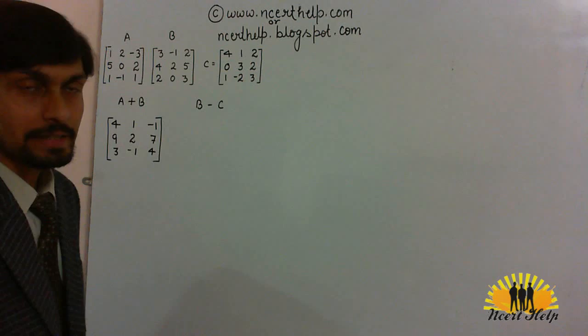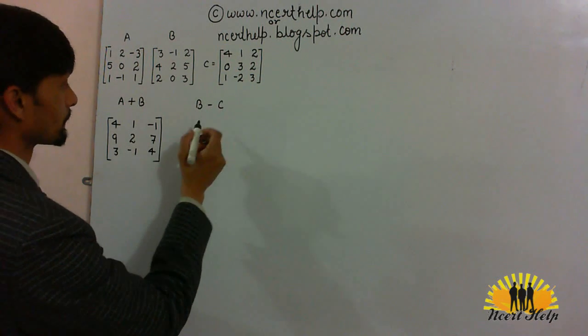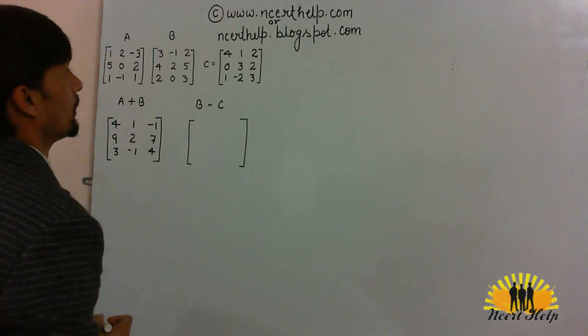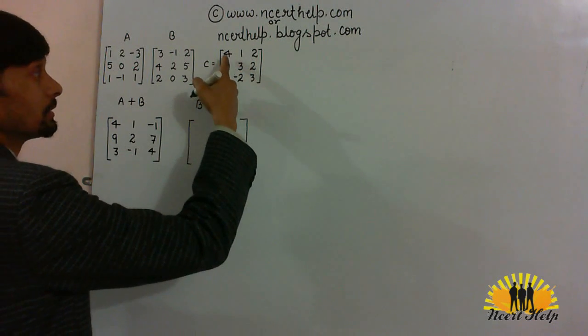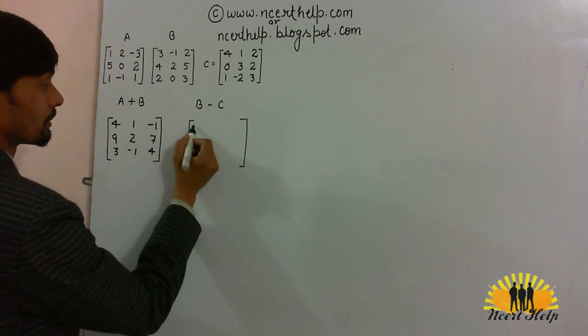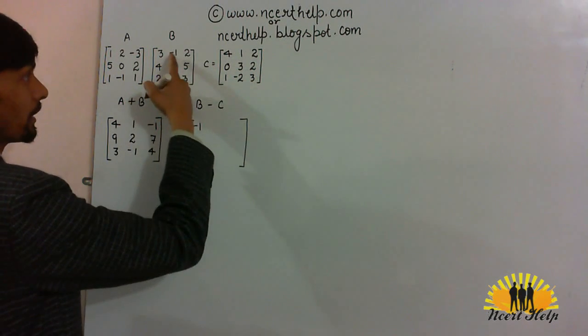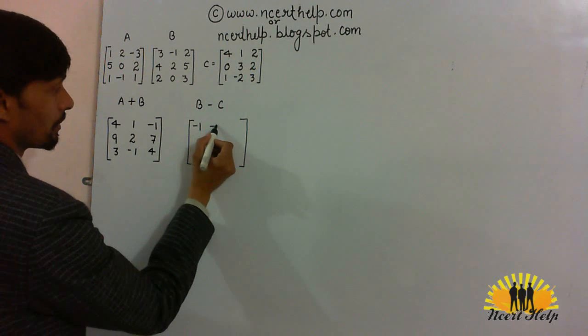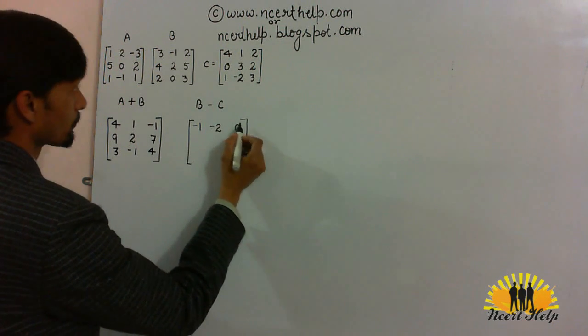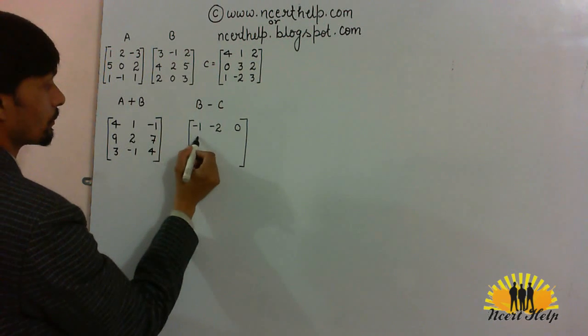Now, we have to find out matrix B minus C. While subtracting the elements of C from B, we will get 3 minus 4, minus 1, minus 1 minus 1, minus 2, 2 minus 2, 0.